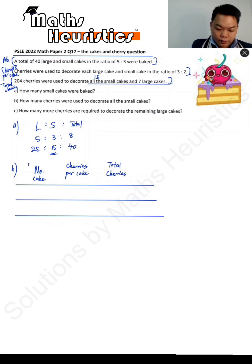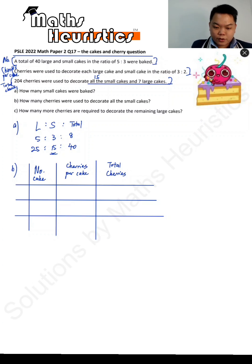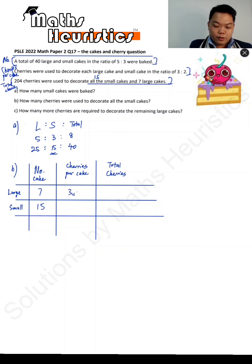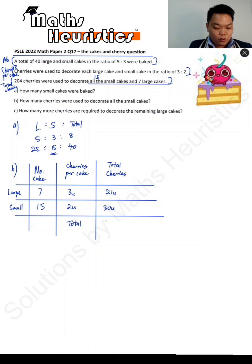So we have 7 large cakes and 15 small cakes. Cherries per cake are in the ratio of 3 to 2, so that's 3 units and 2 units respectively. Multiplying out, you get 21 units for the large cakes and 30 units for the small cakes, giving a total of 51 units of cherries used.